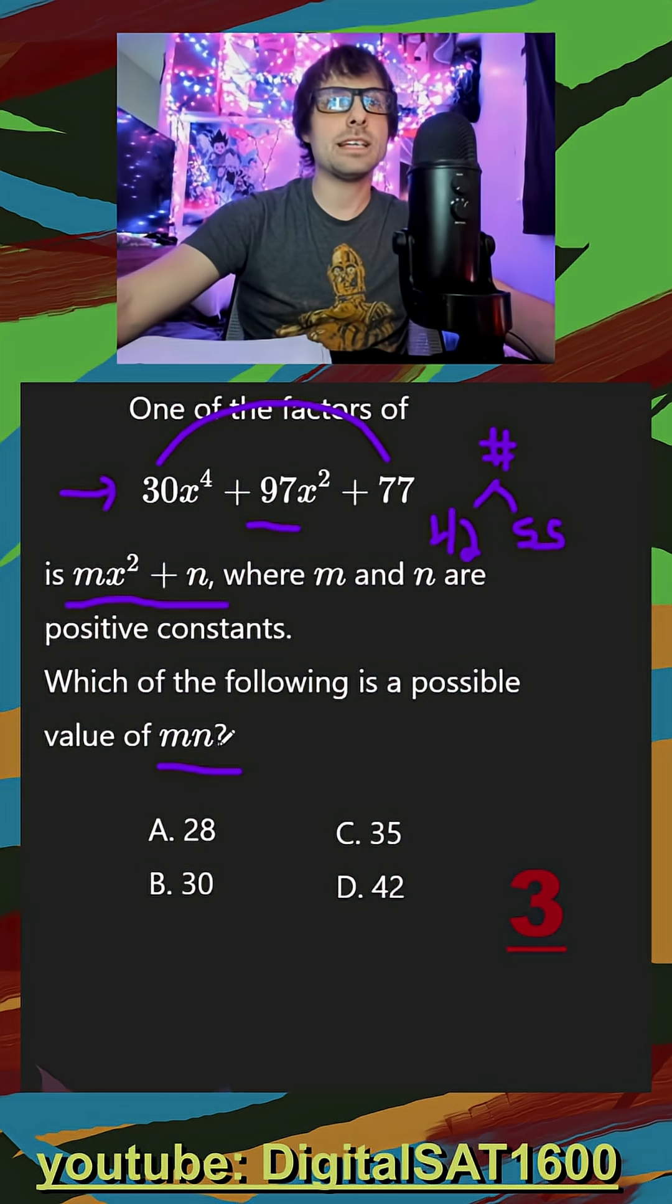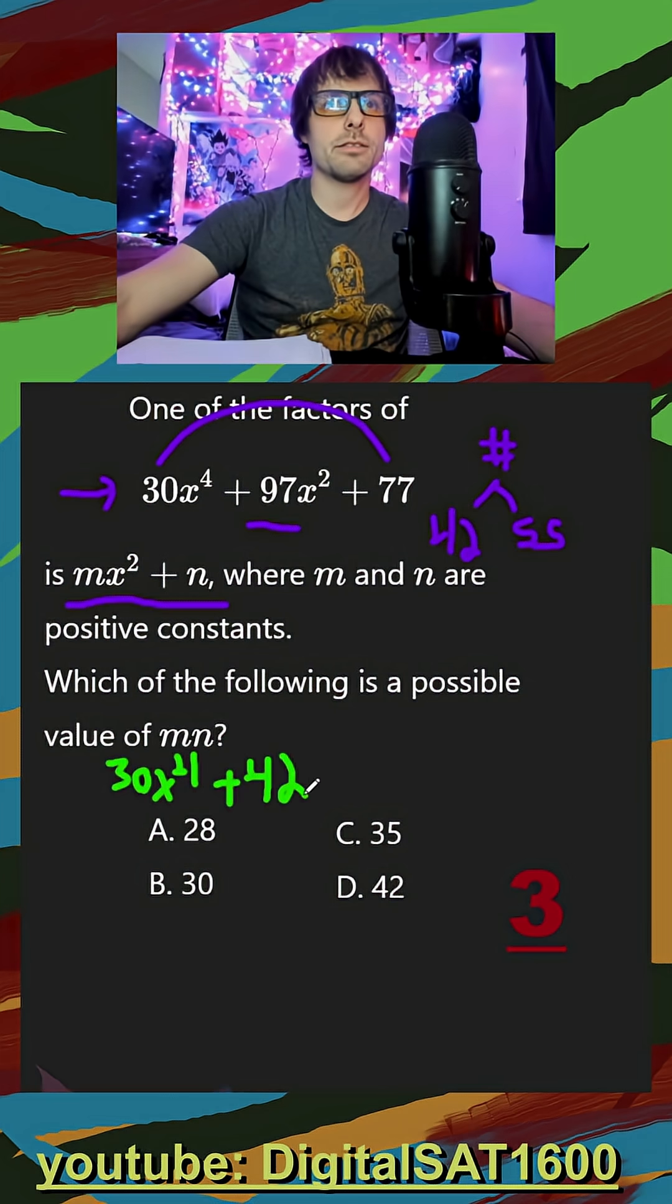Then we just do a little factor by grouping down below. We have 30x⁴, and I'll pair the 42x² with that, and then plus my 55x² with the 77.